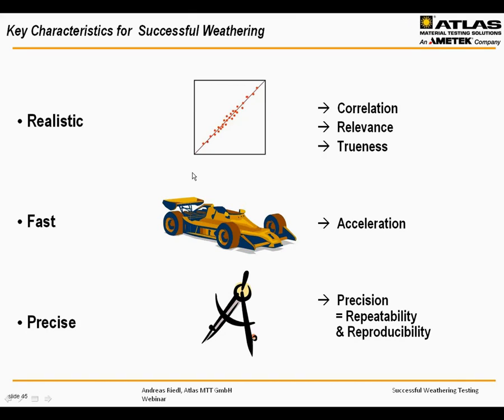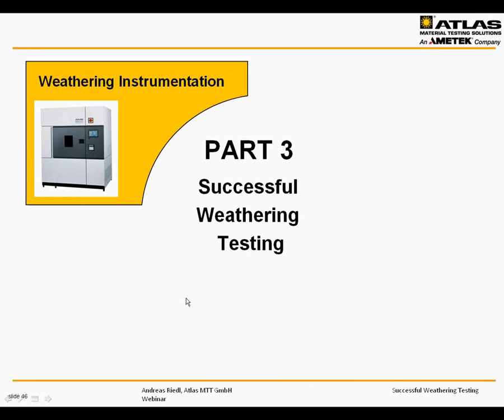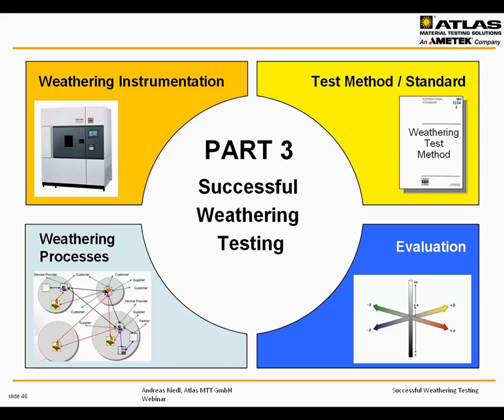To summarize Part 2: the key characteristics for a successful weathering test are whether the test is realistic, fast, and precise. This leads to the concepts of correlation, relevance, trueness, acceleration, and precision — meaning repeatability and reproducibility. In Part 3, I will discuss the factors of successful weathering testing, divided into four areas: weathering instrumentation, test methods, evaluation, and weathering processes. I will mostly elaborate on the first two — instrumentation technology and the testing standard — and only briefly touch on evaluation and processes.